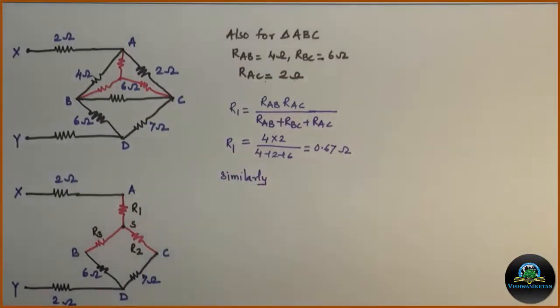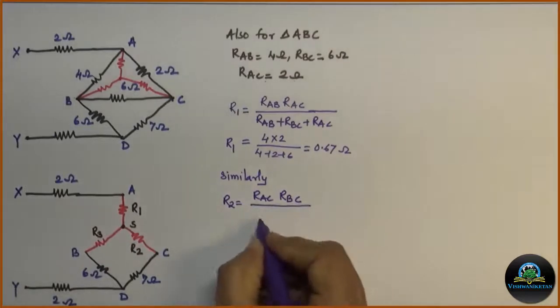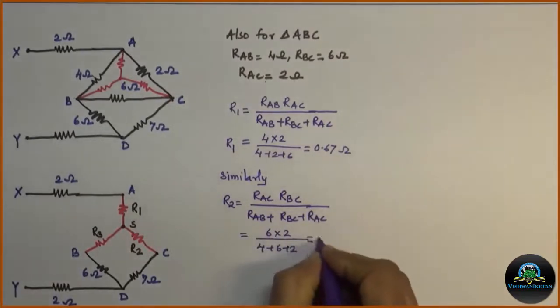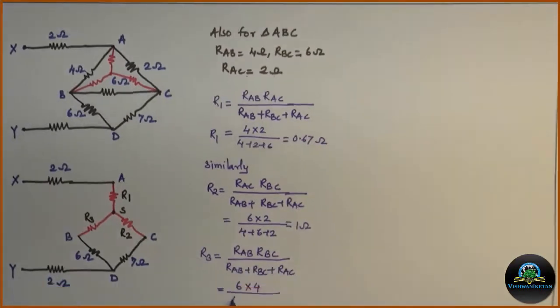Similarly, I will calculate the values of R2 and R3. R2 can be calculated as RAC into RBC divided by RAB plus RBC plus RAC. Substitute all values, we will get R2 as 1 ohm. And R3 is RAB into RBC divided by RAB plus RBC plus RAC. So, I will get value of R3 as 2 ohm.